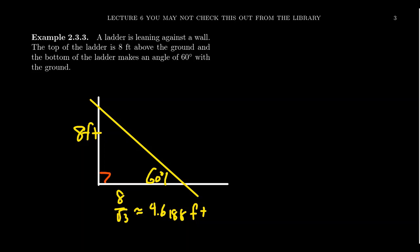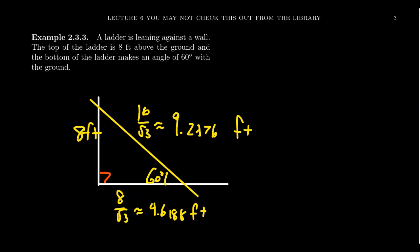To find the length of the ladder — the hypotenuse — we multiply the short side by 2, giving 16/√3 ≈ 9.2376 feet, so the ladder is approximately 9 feet in length. These 30-60-90 triangles are special cases where you don't need to use sine, cosine, or tangent ratios to find the missing sides. Instead, you can use the doubling or square root of 3 relationships to find the missing sides.